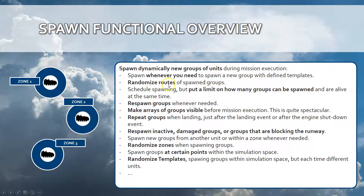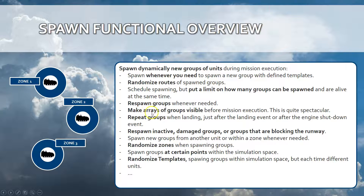You can randomize the routes that these groups are following. You can put a limit on how many groups can be spawned, and you can do scheduled spawning — that means at a defined frequency and time you can spawn new units or groups automatically. You can respawn those groups whenever needed, and you can make those groups visible before the mission starts so that players will see a vast array of ground forces ready to engage.